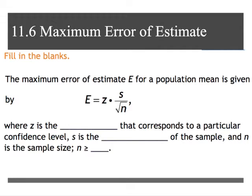We're going to do 11.6 Maximum Error of Estimate, focusing on using the confidence interval. What this is all about is using stats to make conclusions about the population using our information, especially our sample size. Let's take a look at how to calculate maximum error.